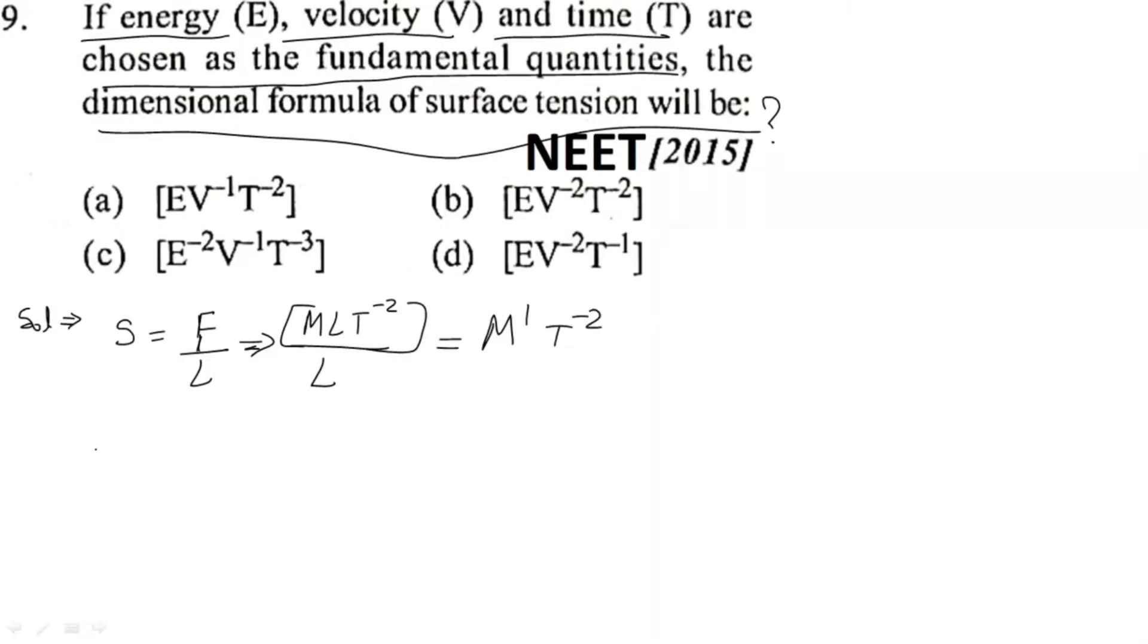Now substituting with energy, velocity, and time, we can write energy dimension as M¹ L² T⁻². Now velocity is L T⁻¹, and T always has dimension as T.